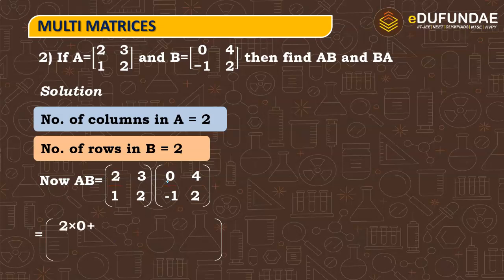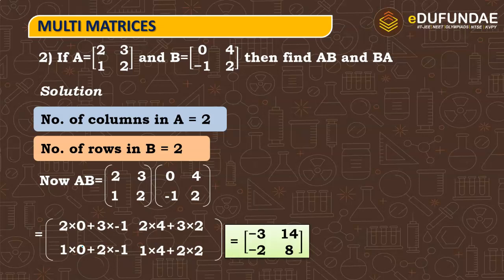Now we multiply the first row with the first column to get the first entry. 2 into 0 plus 3 into minus 1. Next entry will give us 2 into 4 plus 3 into 2. Similarly, we will follow this basic method.